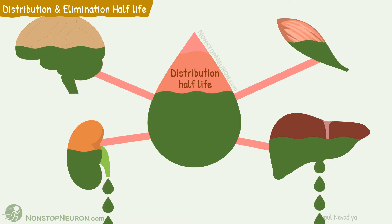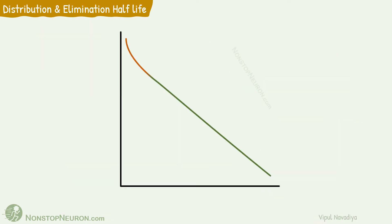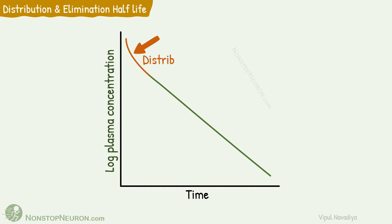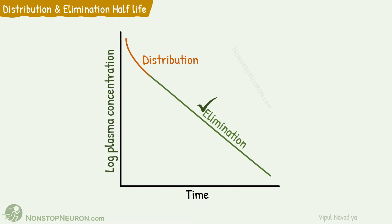Now the liver or kidney, or whichever route is involved, starts to eliminate the drug. Due to this, there is a gradual fall in plasma concentration. Plasma half-life for this elimination is called elimination half-life. If we make a graph of log plasma concentration against time, it looks like this. Here, this initial rapid fall is due to distribution and this gradual fall is due to elimination. Both half-lives can be calculated from their respective slopes. Among the two, elimination half-life is more important, and usually when we say half-life, it's elimination half-life that we mean.